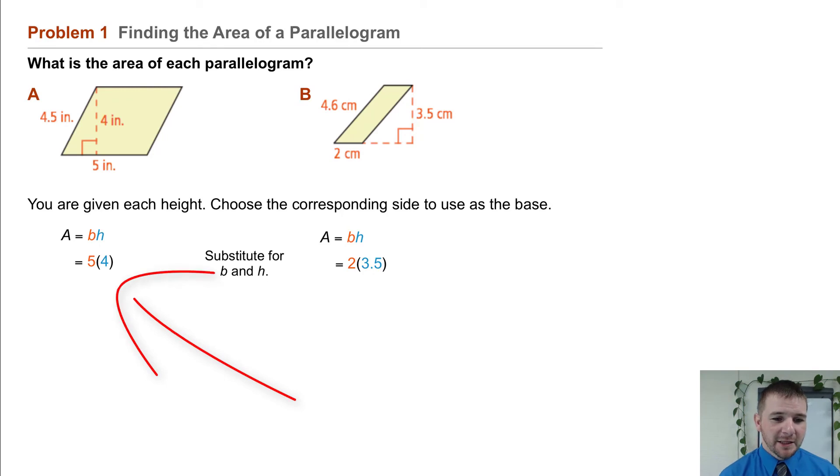On the left, part A, it's going to be 5 times 4. On the right, for part B, 2 times 3.5.